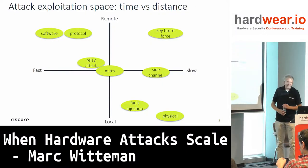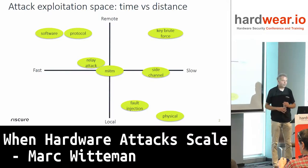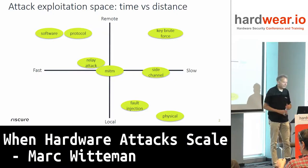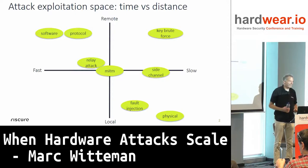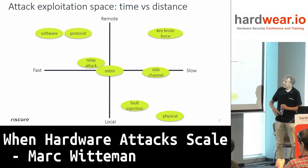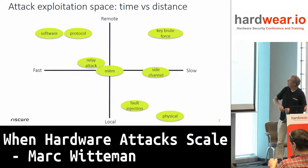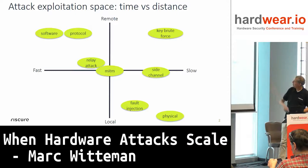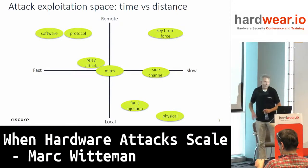If you look at the attack exploitation space, I have an axis of time versus distance. On the horizontal axis to the right, you see very slow attacks; on the left side, very fast attacks. At the bottom, you see local attacks where the attacker has the target in hand. On the top, you see remote attacks where the attacker can be far away. Typically software attacks are relatively fast in execution and can be done remotely. On the right-hand side, you see the slower attacks. Brute forcing is slow, side channel attacks tend to be a bit slow, fault injection typically needs to be very local, and physical attacks are both local and slow.